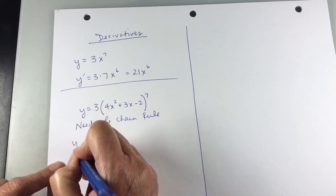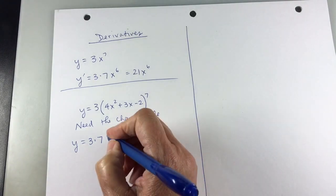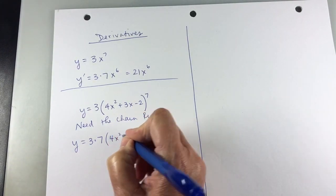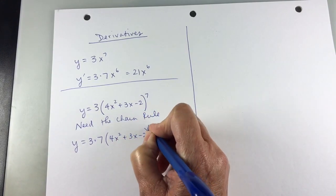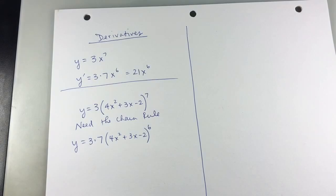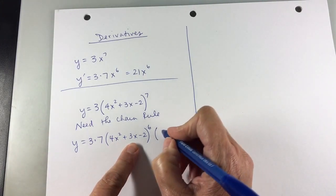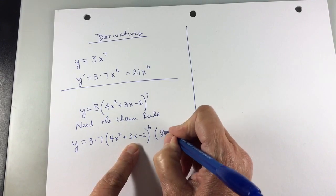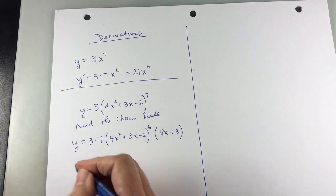And so y equals, I'm going to put the 7, just like I'd put it there in that 3x to the 7th, 3 times 7. Then copy 4x squared plus 3x minus 2, you reduce the exponent, and now I need the chain rule portion, where I do the derivative of 4x squared plus 3x, and it's going to be 8x plus 3. I'm going to leave it like that.